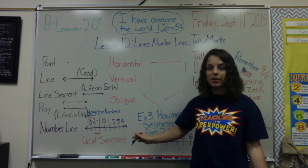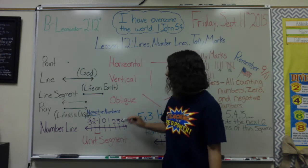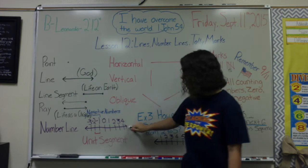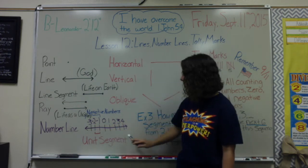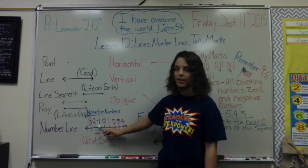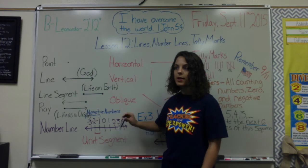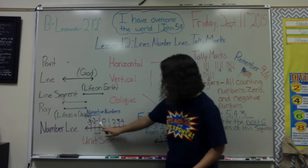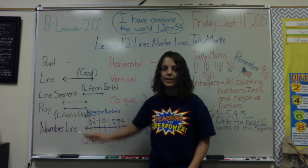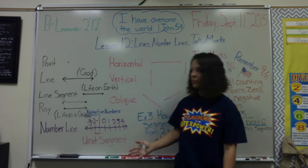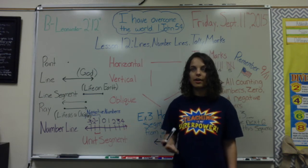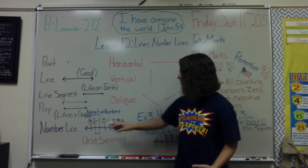The next thing we're going to look at is number lines. Number lines you are already familiar with. The keyword is 'line' — it can continue on and on forever, and we have arrows at each end to represent that. This number line has zero, some positive numbers, and also negative numbers. Negative numbers are numbers that go before zero: negative one, negative two, negative three, negative four, negative five, and so on.